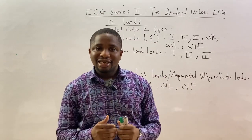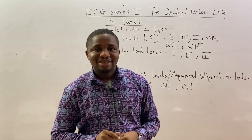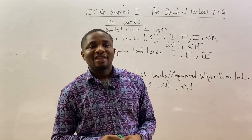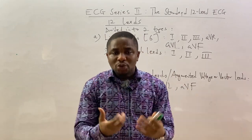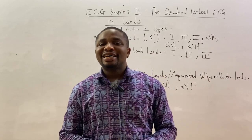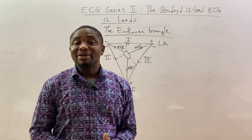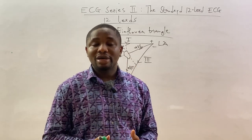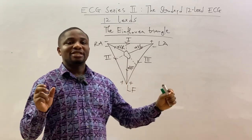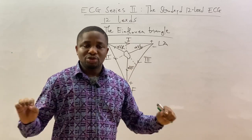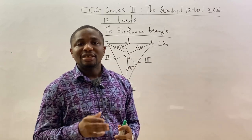The next interesting principle we are going to look at is the Einthoven triangle. The Einthoven triangle will help us to obtain the six limb leads we spoke about. To understand it, we need to look at where the ECG electrodes are placed.